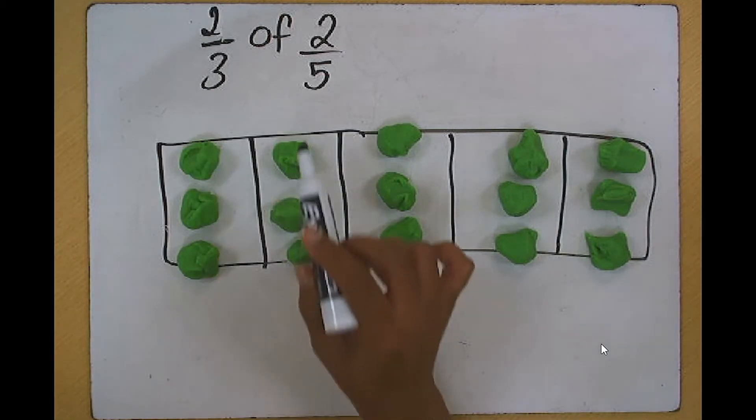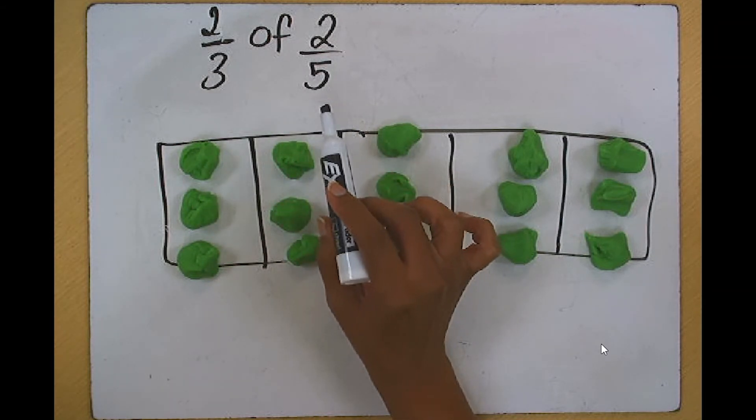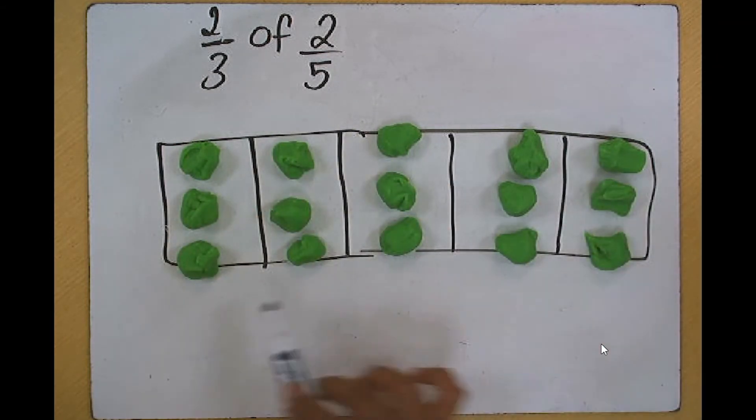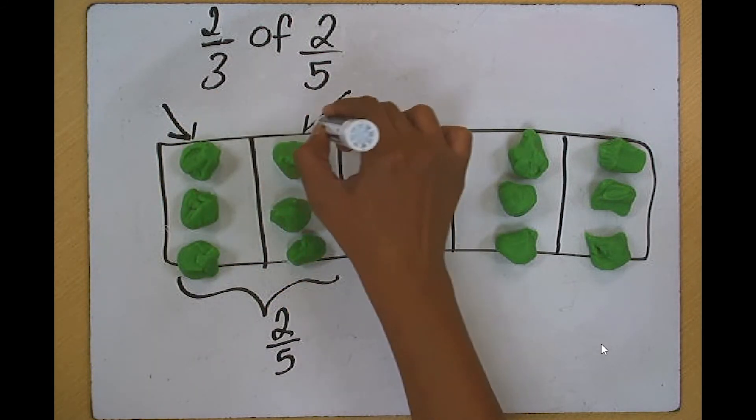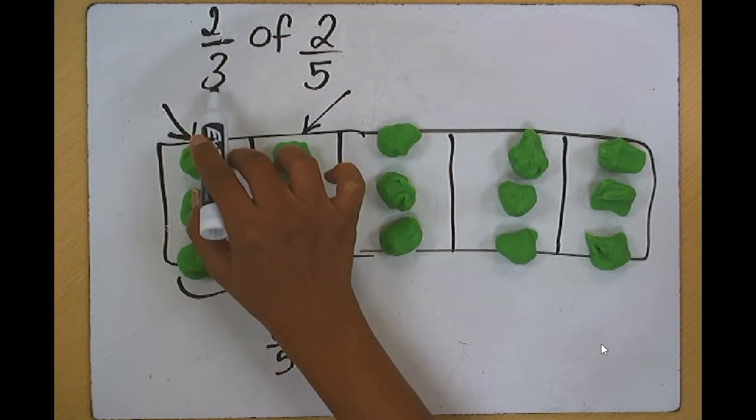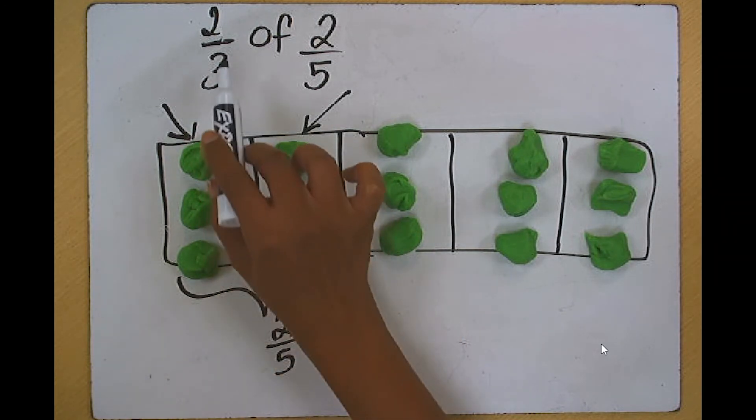Let's look at an extension if we need to find two-thirds of two-fifths in this case. Remember, we use the Play-Doh and we split them into the fifths. So this will be our two-fifths. We are focusing on this portion and this portion. Since we need to divide them into thirds, we split them into three equal parts. But in this case, we need to take two-thirds of two-fifths.